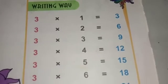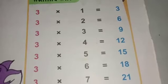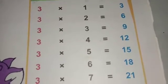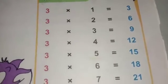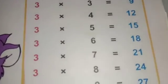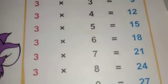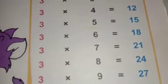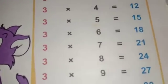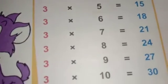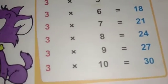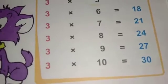3 1s are 3, 3 2s are 6, 3 3s are 9, 3 4s are 12, 3 5s are 15, 3 6s are 18, 3 7s are 21, 3 8s are 24, 3 9s are 27, 3 10s are 30.